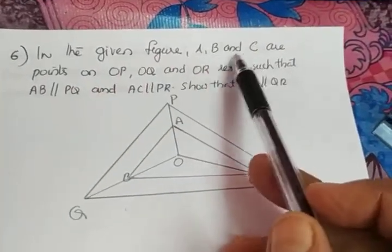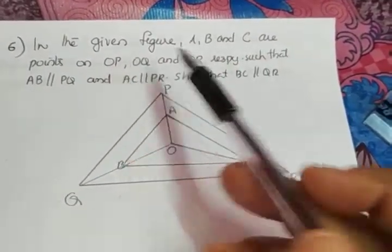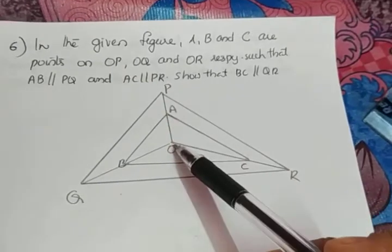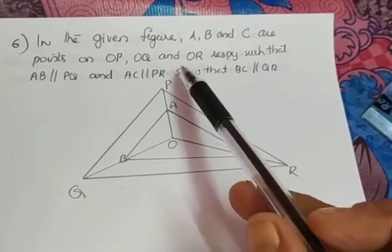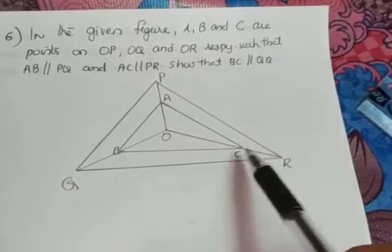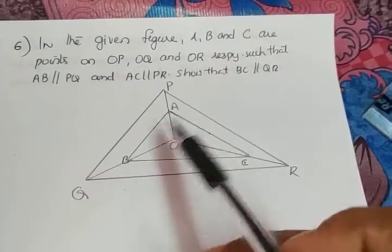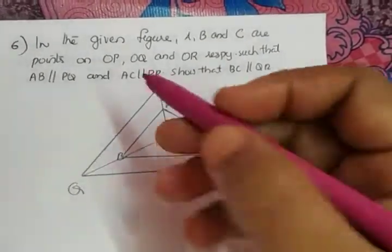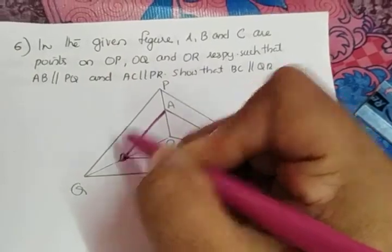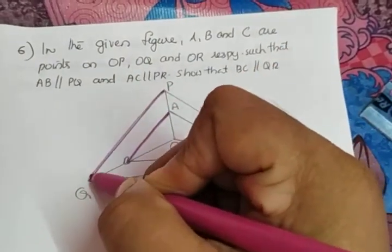In the given figure, A is a point on OP, B is a point on OQ, and C is a point on OR. The first condition given is AB parallel to PQ — AB is this line parallel to PQ.